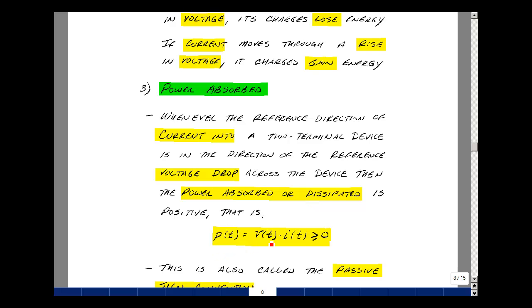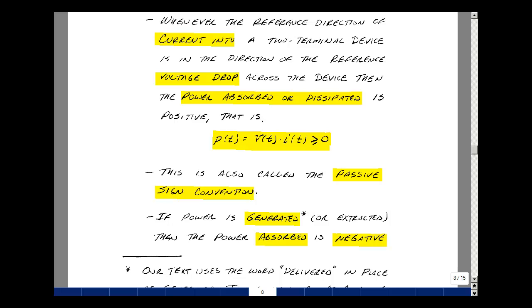In other words, the power is equal to the voltage times the current. This is called the passive sign convention, and this is what was shown on the previous page. We see that power is generated or extracted whenever the power absorbed is negative.